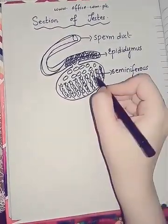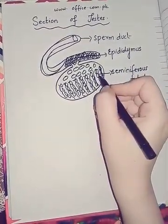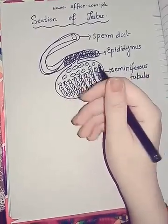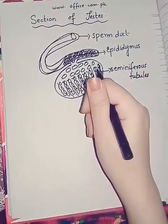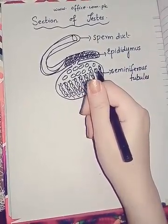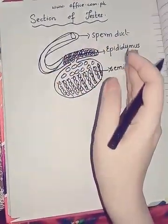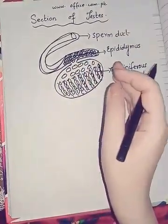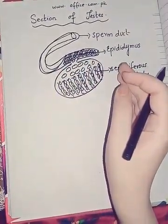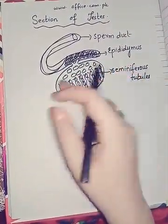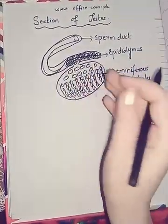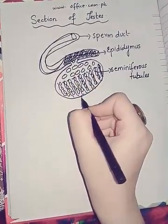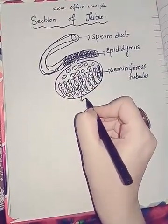Here, spermatogonia are present, which are then converted into spermatocytes, and then spermatocytes through the process of meiosis are converted into spermatids, and finally into sperms. These are the testes.